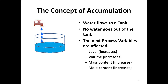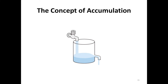Let's look at the concept of accumulation. If water flows into a tank and no water goes out, then the process variables — level, volume, mass content, and moles — all increase. That is accumulation. Another case: water comes in and water goes out, but depending on the relative flow rates, we can still have accumulation, and the level of water in the tank is changing.